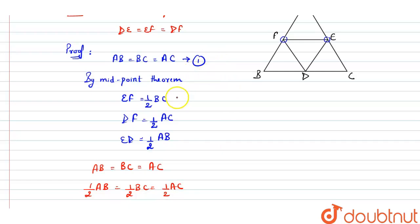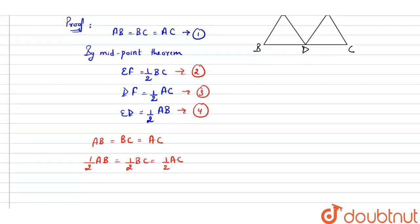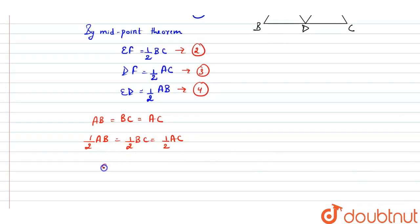So by using the equations 2nd, 3rd, and 4th, we can write EF equals DF equals ED. These are the sides of triangle DEF.